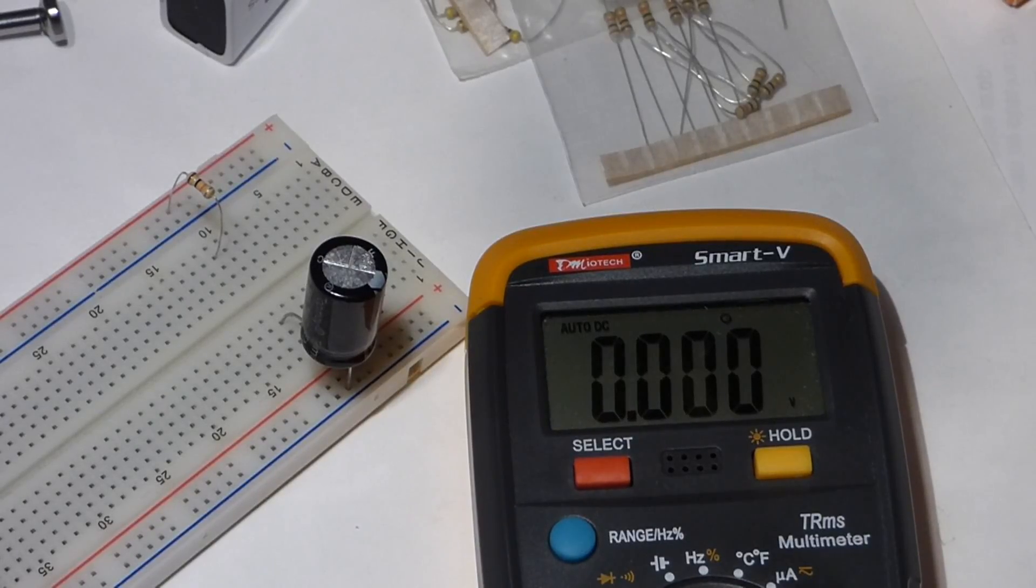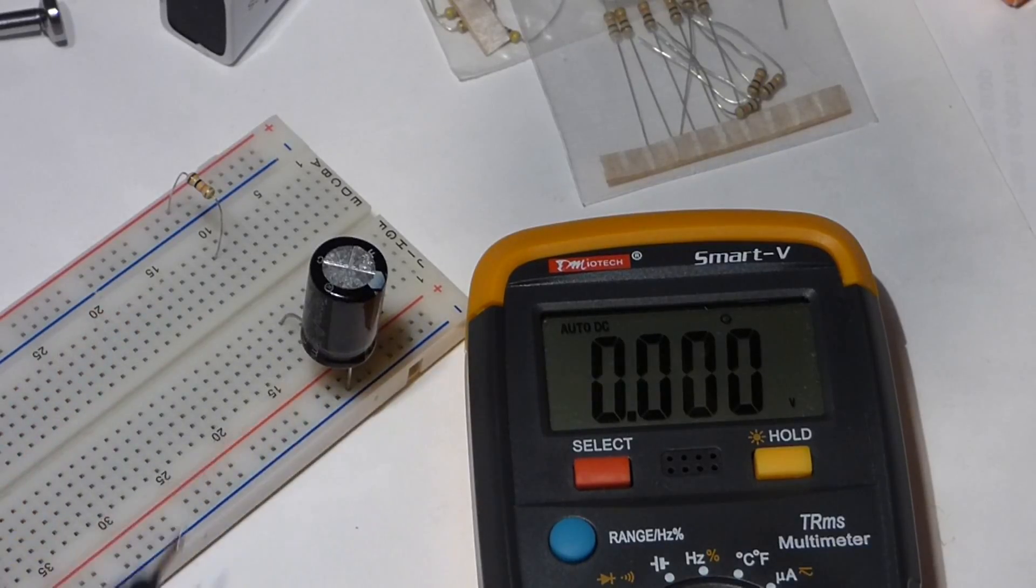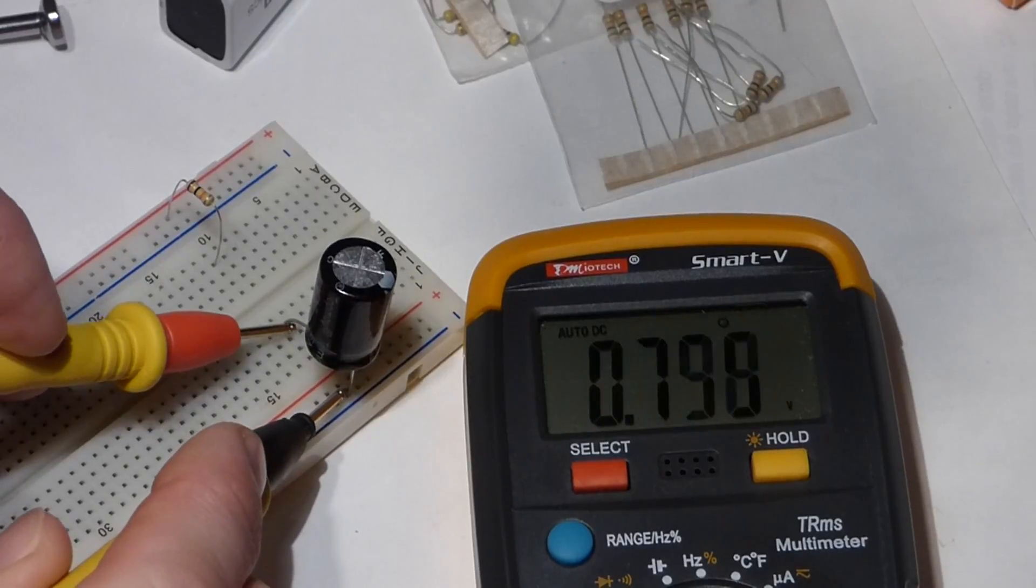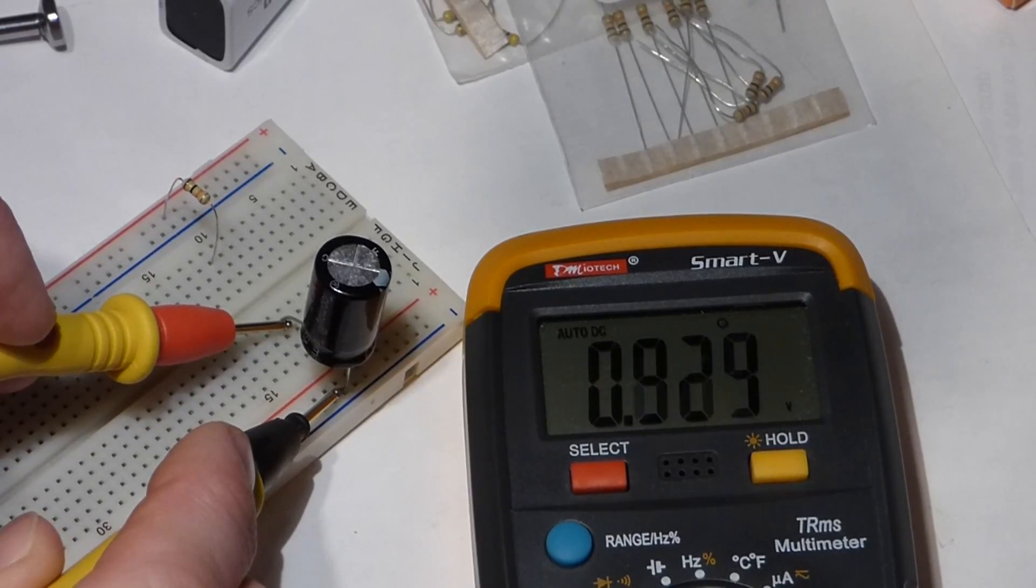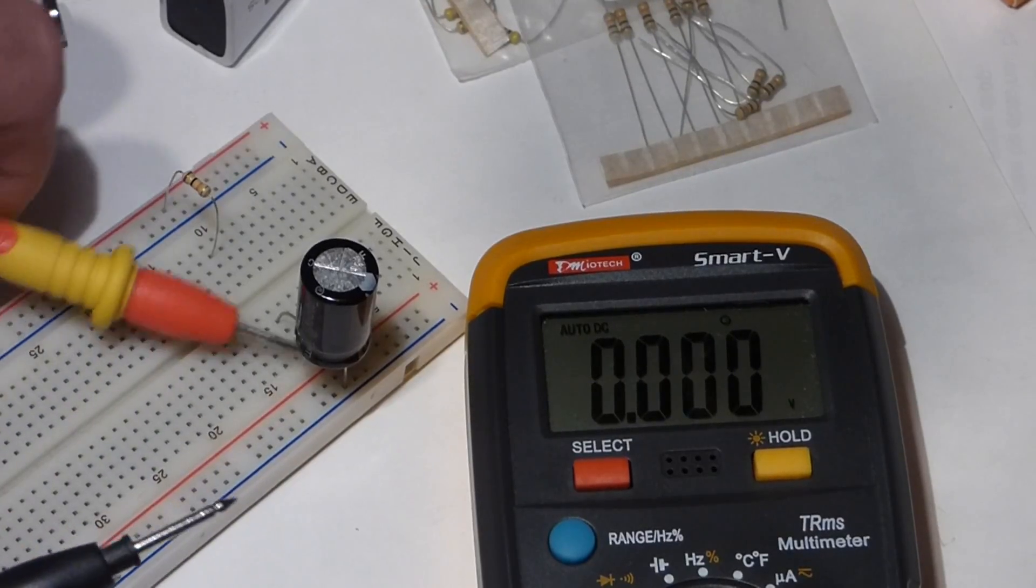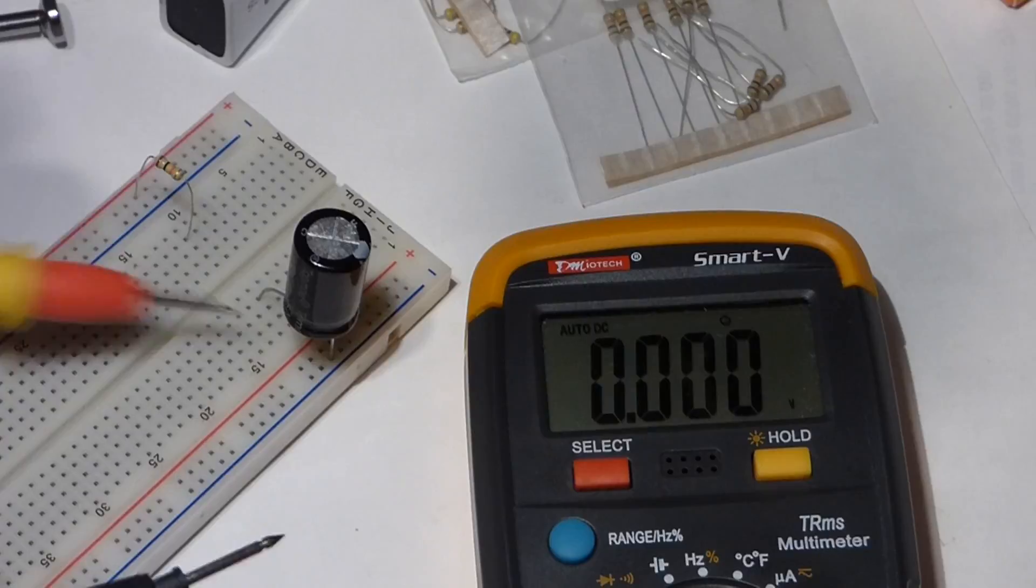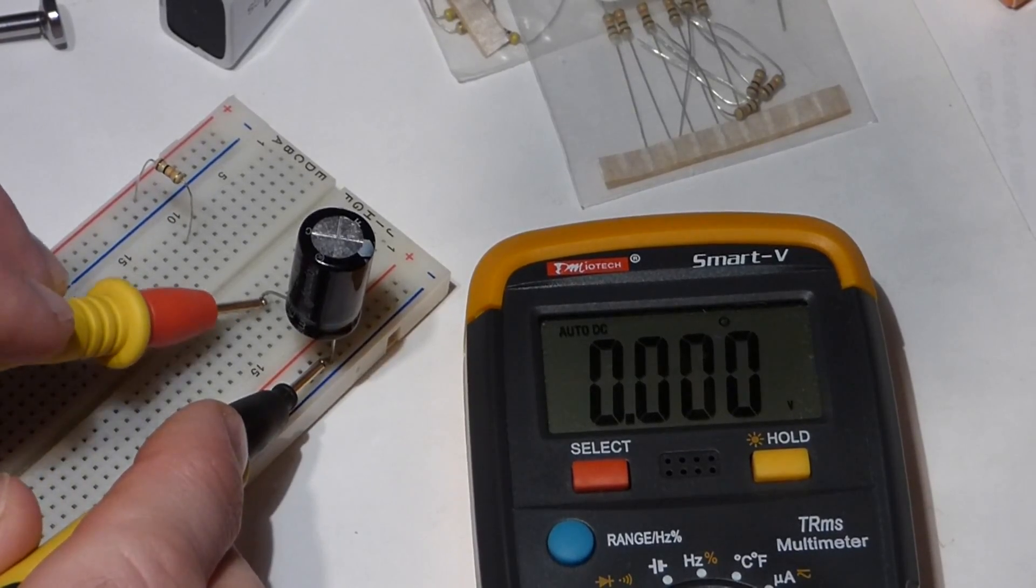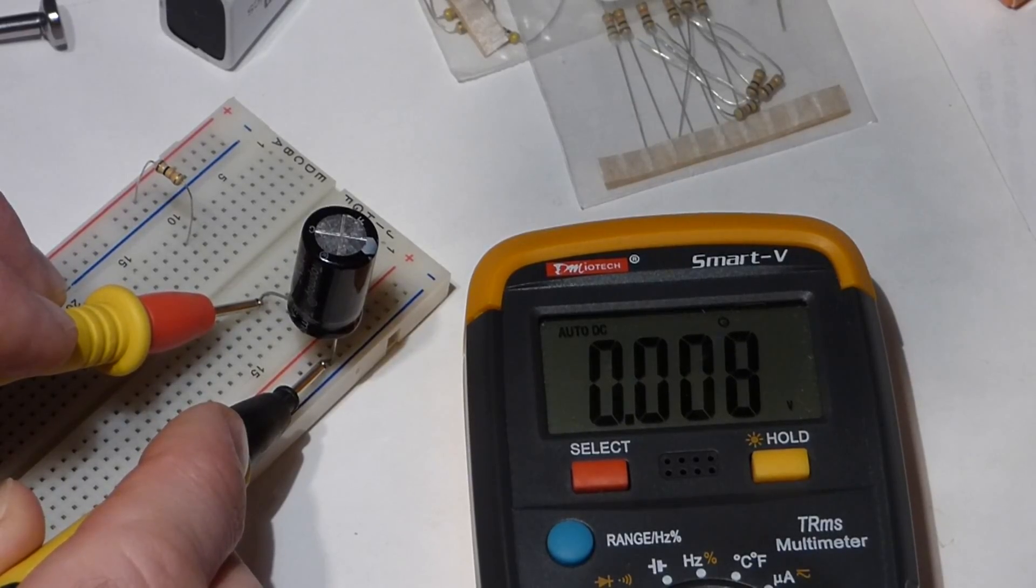Before I begin this video, I just want to remind you that these capacitors store charge, sometimes for a long time. In this case, this capacitor has almost a full volt of charge, so I can just drain it. Since this is a small capacitor, I can just connect the two leads with the multimeter probe, and now you see we have a discharged capacitor.